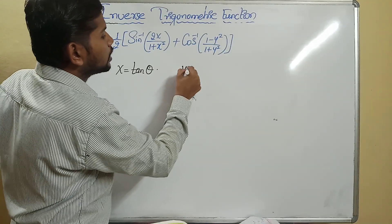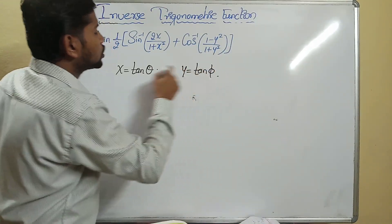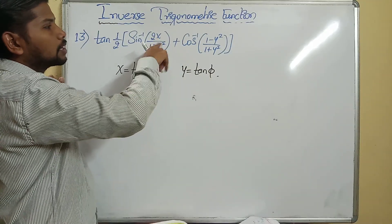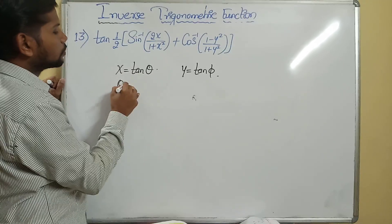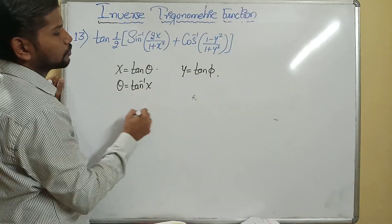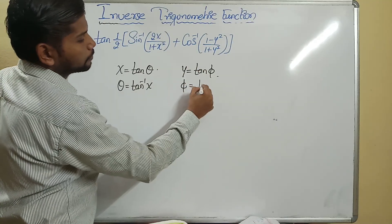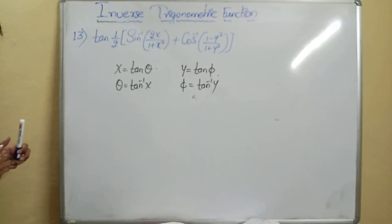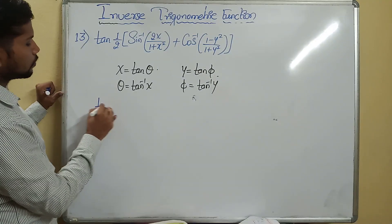Here y equals tan of pi — I am changing one variable as theta and another as pi because the problem uses two different variables. What is the theta value? Exactly, it is tan inverse of x. What is pi value? Taking tan on the left-hand side, it is tan inverse of y.